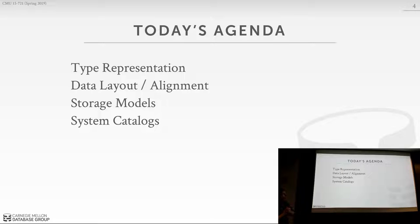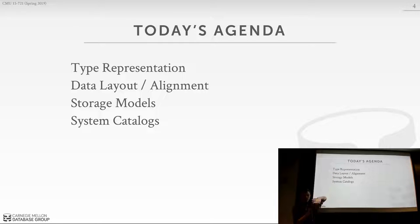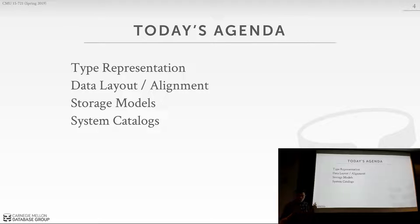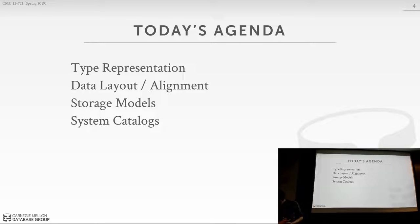For today's agenda: first, we'll talk at the lowest level about how to represent individual types in a tuple. Then we'll discuss how to actually lay out the data to ensure word alignment. Then we'll talk about how to store multiple attributes from the same tuple or the same attribute from multiple tuples — as a row store or column store. We'll start at a single attribute and get bigger from there. Finally, we'll cover system catalogs, which I find fascinating — I'd love to do a whole lecture on them, but there's no good paper yet.